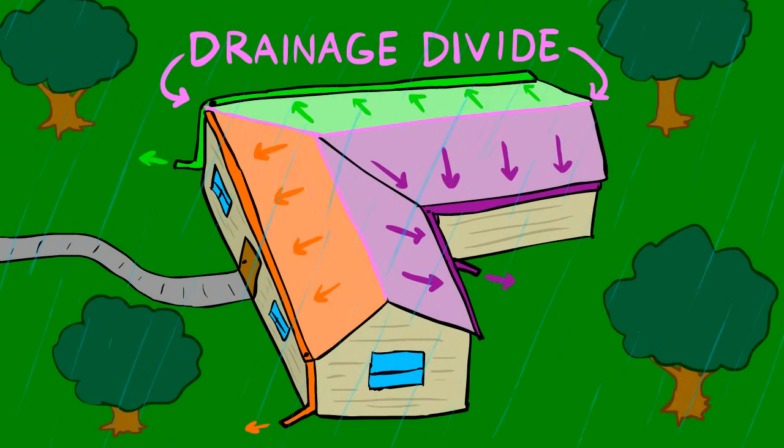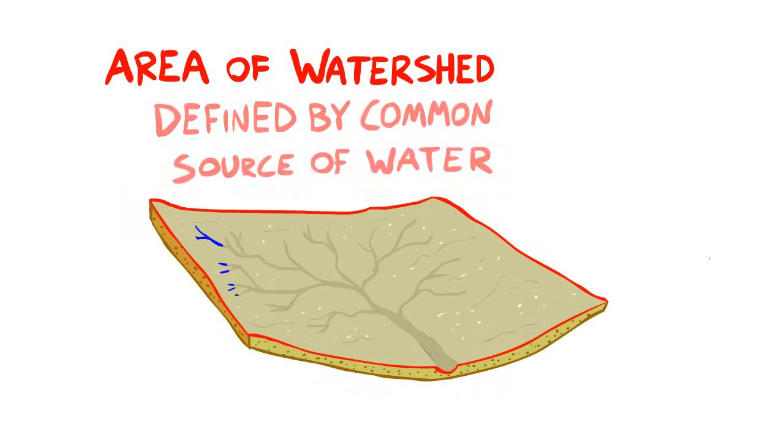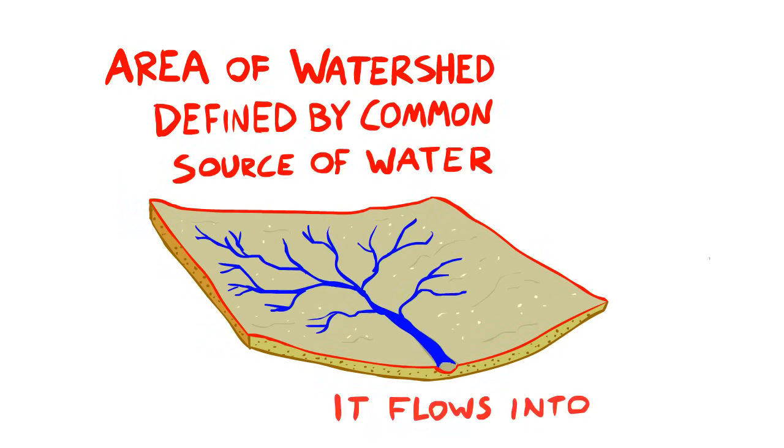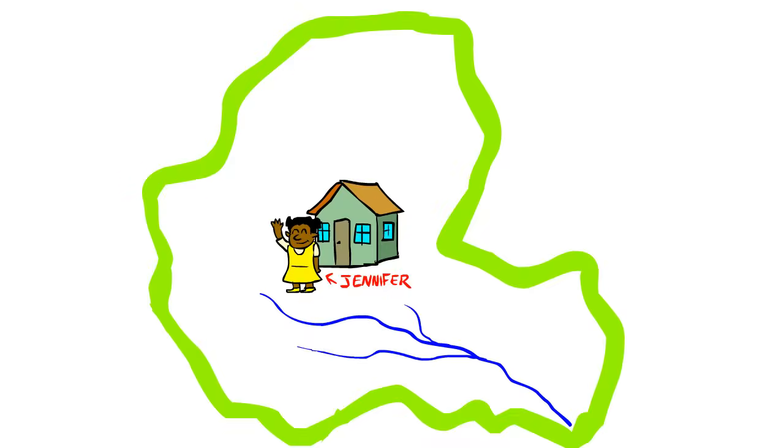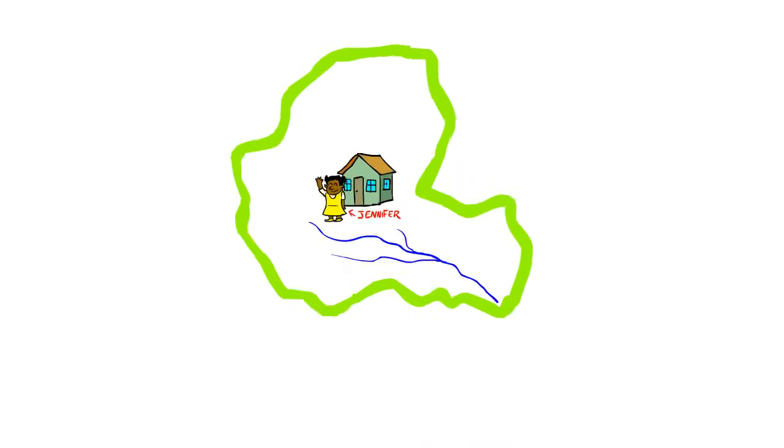The area of a watershed is also defined by what common source of water it flows into. Jennifer lives in a watershed that flows into a nearby stream. That watershed, along with neighboring watersheds, make up an even bigger watershed made up of other neighboring watersheds that make up an even bigger watershed.